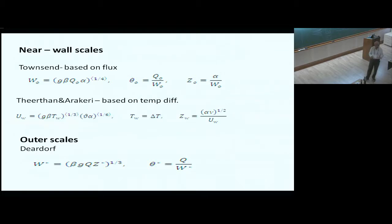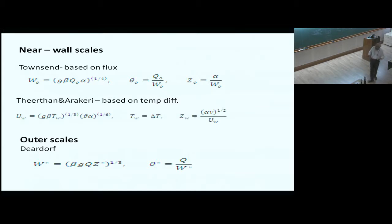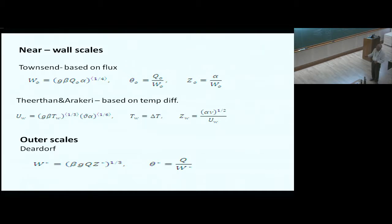Similar to turbulent boundary layers, one can define near-wall scales and outer scales. The near-wall scales were originally proposed by Townsend, based on the heat flux — analogous to basing the near-wall scale on shear stress or momentum flux in turbulent boundary layers. Alternatively, since the temperature difference is known a priori rather than the heat flux, one can use dimensional analysis with the temperature difference to get the near-wall velocity scale and length scale, taking into account viscosity and thermal diffusivity.